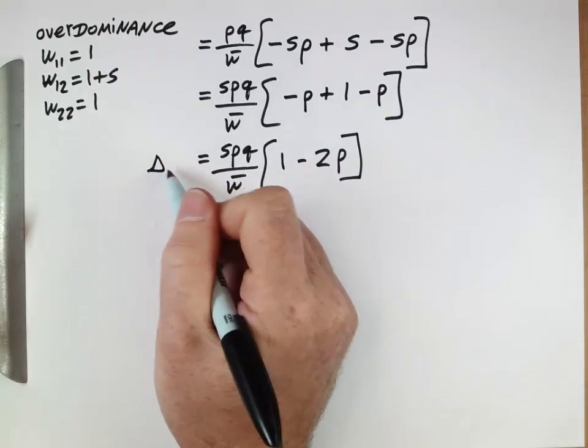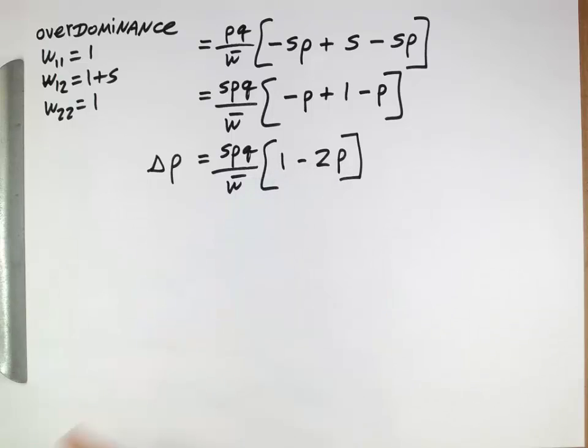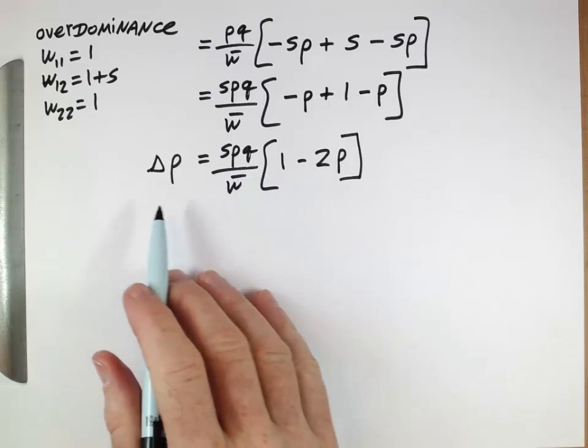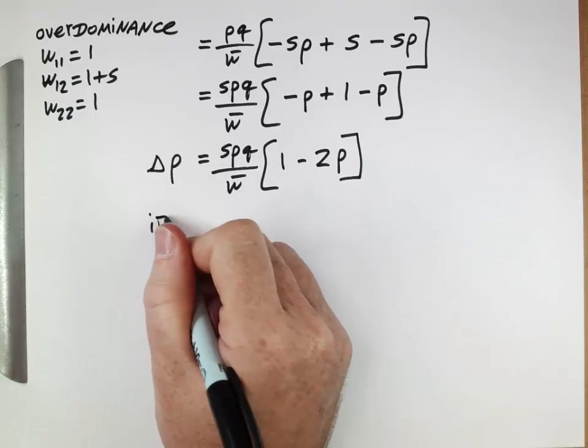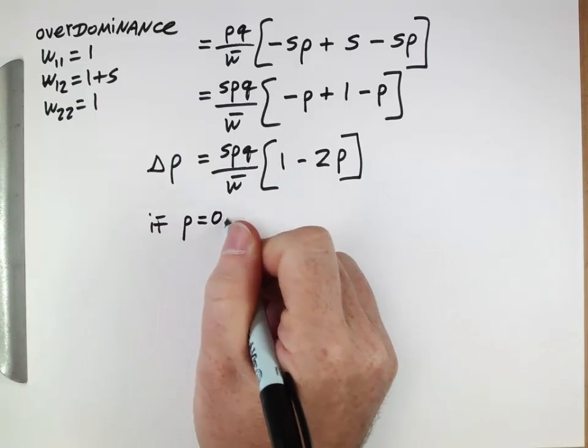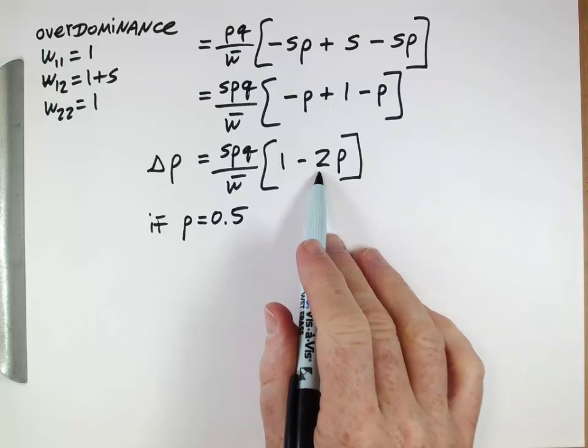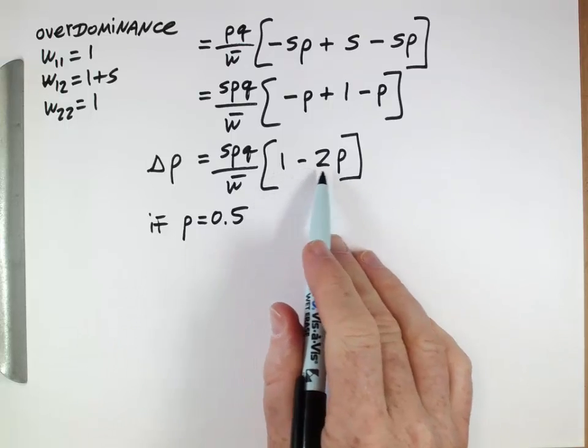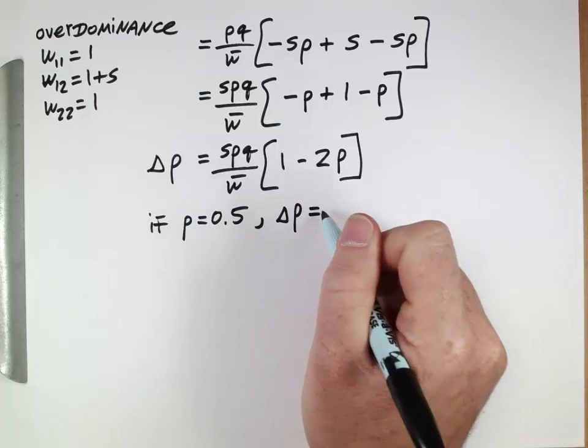And remember, this was delta P. So this is our equation for delta P. And instead of using this to predict next generation, what we'll do is look at this and notice that if P is equal to 0.5, this last term, we'd have 2 times 0.5 is 1. 1 minus 1 is 0. If P is equal to 0.5, delta P ends up being equal to 0.